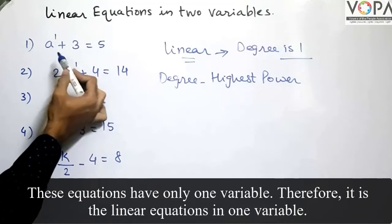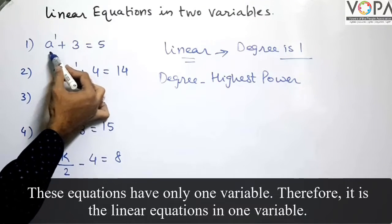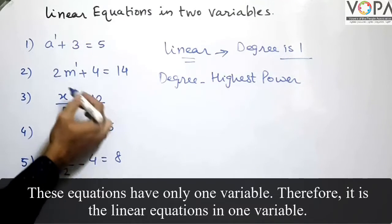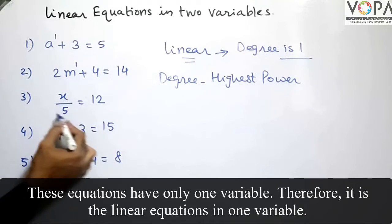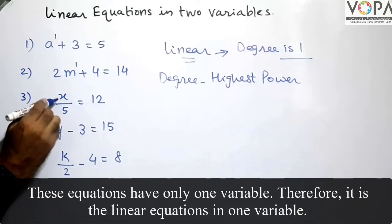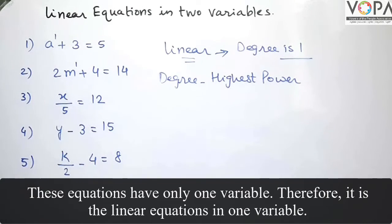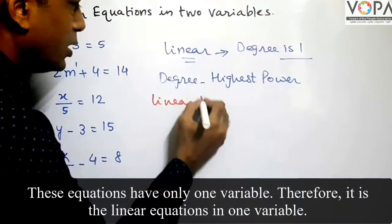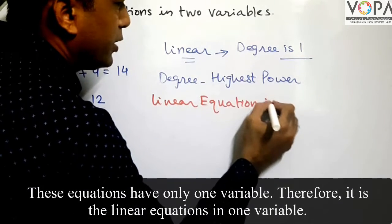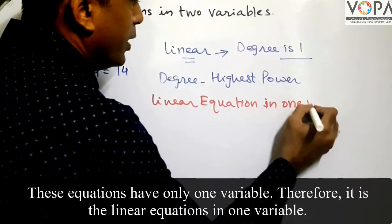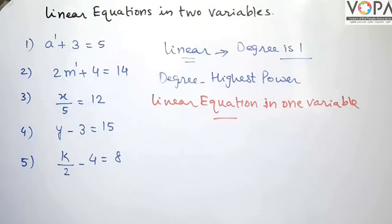Here, the only variable is m. So, these are called linear equations in one variable.